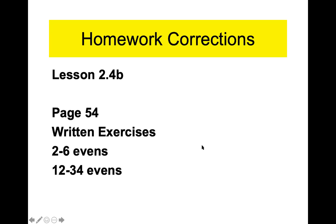What's one times anything? One times anything is itself. So one times this parentheses would just be the parentheses — there's nothing to do here other than get rid of the one. So it's 3.02 plus 4.9. There's a nine and a two; zero plus nine. So 7.92 equals b.